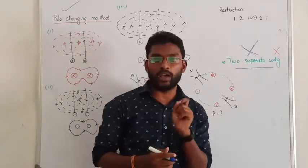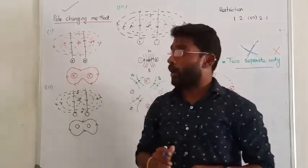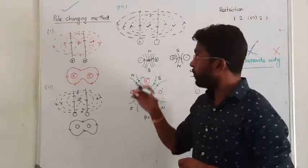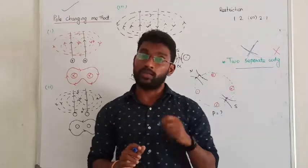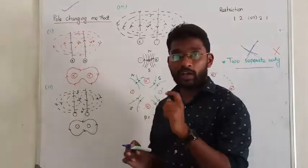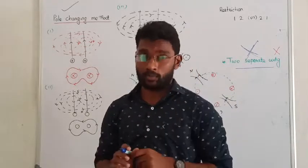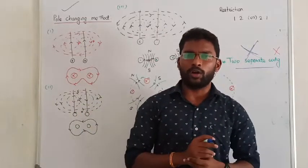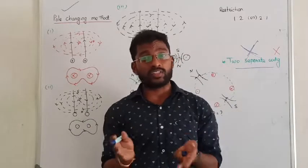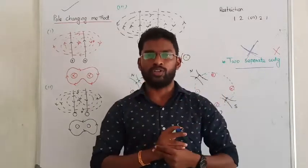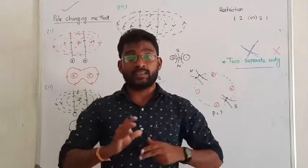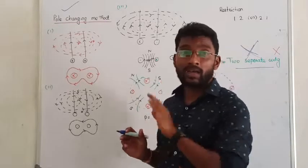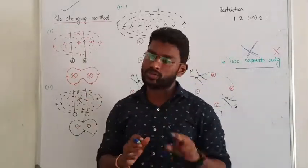This pole changing method is only applicable for squirrel cage induction motors. Why are we not using this method in the case of a slip ring induction motor? In a slip ring induction motor, the number of poles on rotor and stator must be equal, so it is a very complicated method. Generally, people do not give preference to pole changing in the case of slip ring motors.